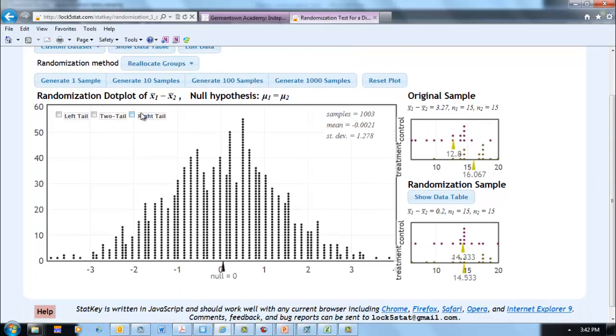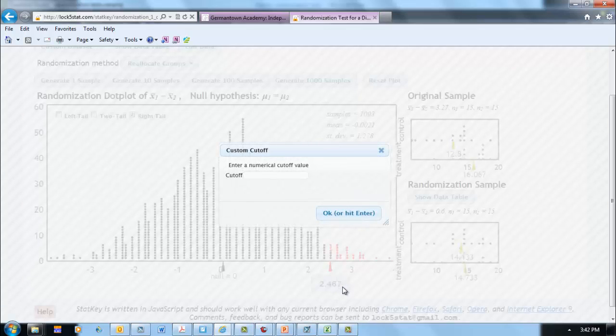So to do this, what we want to do is we want to look at the upper tail. So I'm going to click on Right Tail, and I'm going to edit this here, and I'm going to put our value of interest, which was 3.27, and click OK.